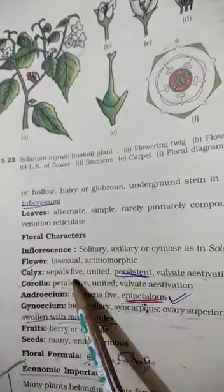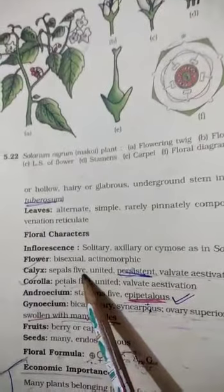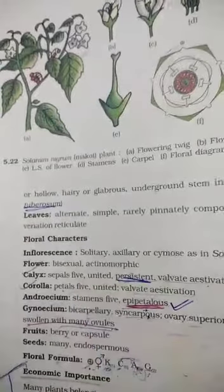Then calyx. Calyx are five and they are united. If you observe the flower of tomato, brinjal, or just observe the brinjal.